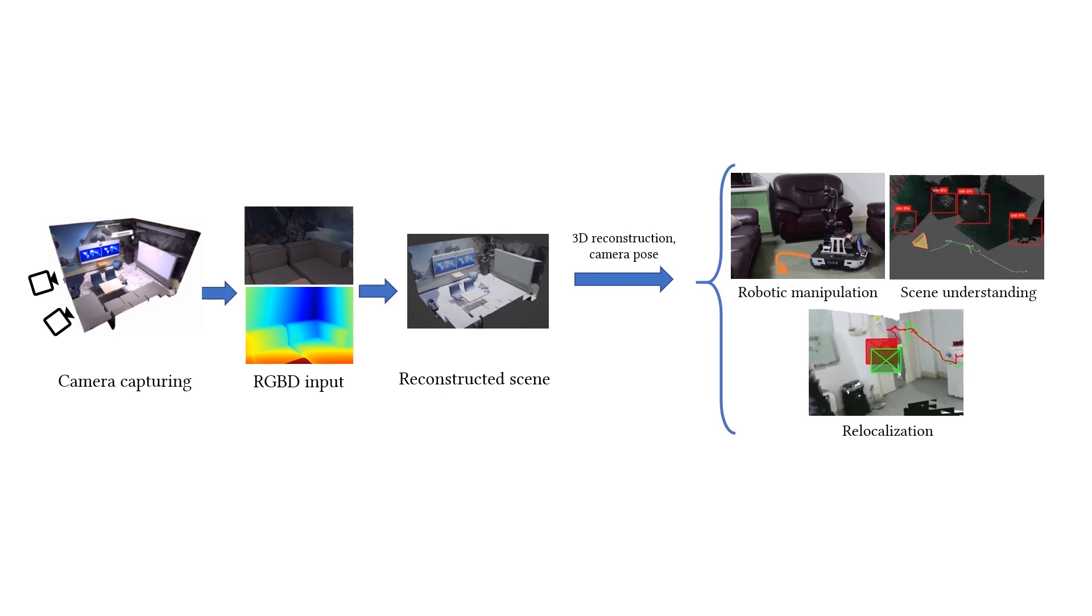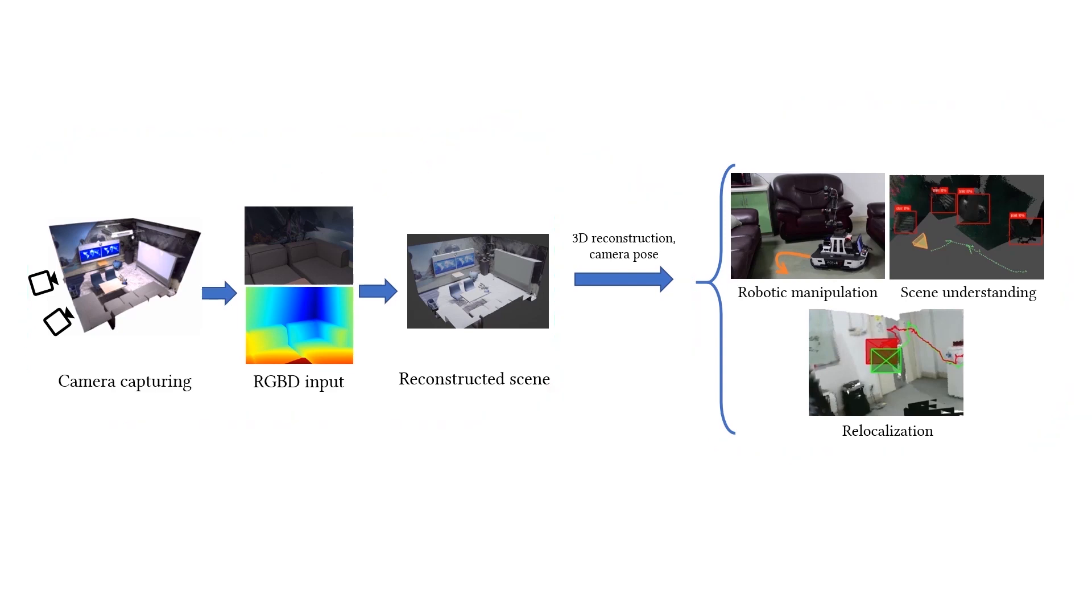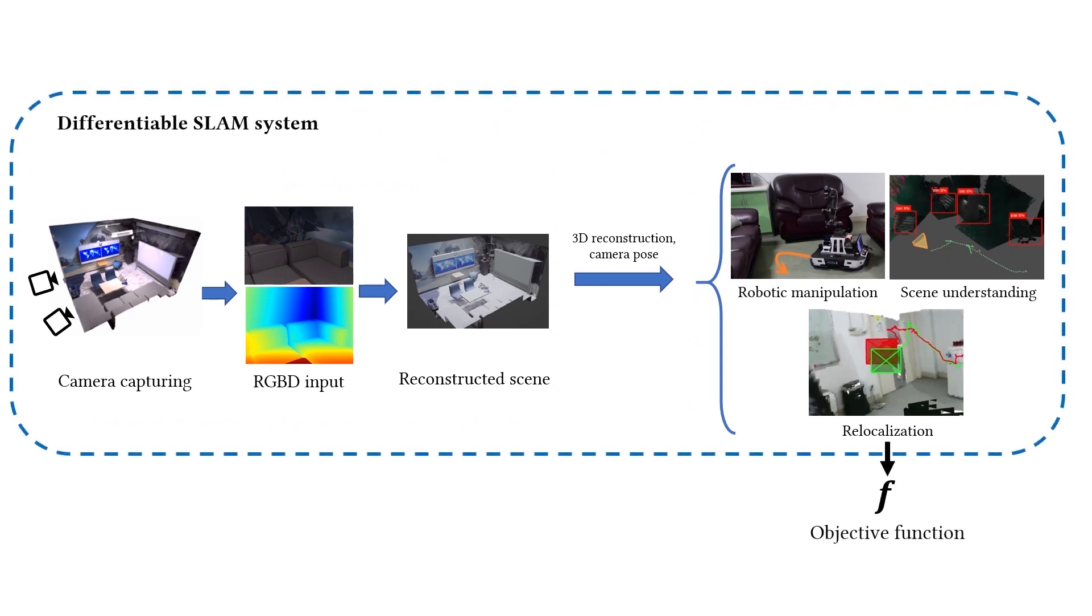Usually, the system and tasks are separated as two modules. The error accumulates during scanning and the task gets erroneous results. Recently, researchers proposed to express the SLAM system as a differentiable function, enabling back-propagating and optimizing the task performance.